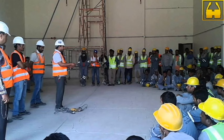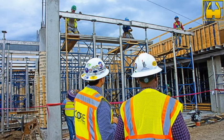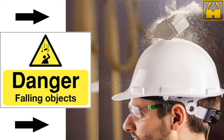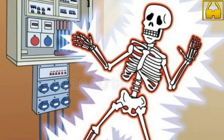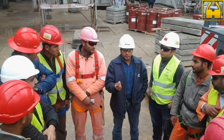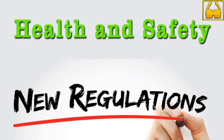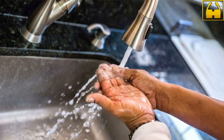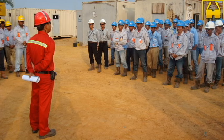Now we look into the key points to be discussed in toolbox talks. We need to tell workers what the current activity is going to be, what hazards are involved in that activity, and what precautions must be followed. Each work activity exposes specific and different types of hazards, therefore all hazards must be clearly identified and communicated to workers. Key changes in safety regulations must be discussed, and good health and hygiene habits and ill health reports must be shared with workers.